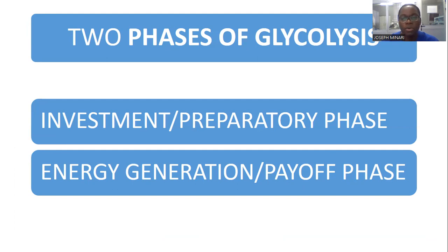Glycolysis happens in two phases: the investment or preparatory phase, and the energy generation or payoff phase. After digestion, you have your glucose, and in the presence of ATP being invested at this point, the enzyme hexokinase — and in some cases glucokinase, especially in the liver and the pancreatic beta cells — assists in the conversion of this glucose.